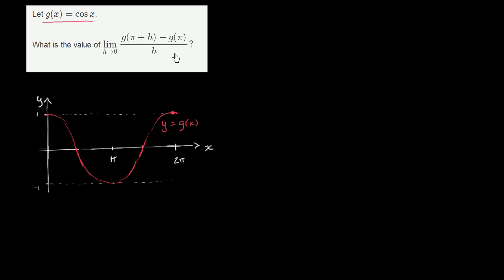So they are concerning themselves with g(π). So let's look at the point π comma g(π). So that right there is the point π comma g(π). And they're also concerning themselves with g(π + h). So let's say that this right over here is the x value π + h. Then this right over here would be the point π + h, g(π + h), which would be this point right over here.